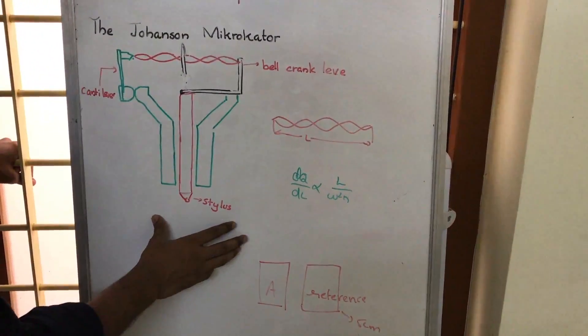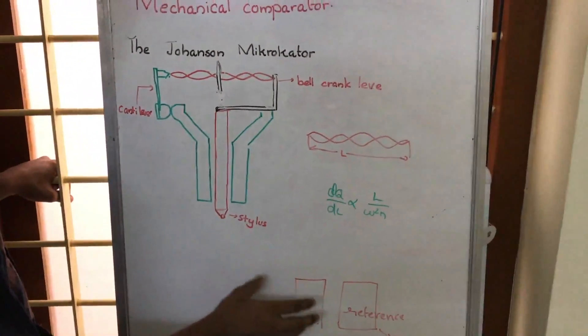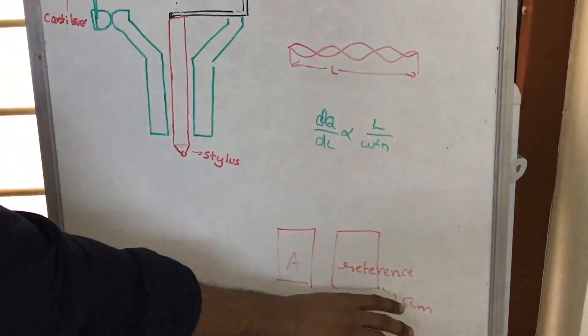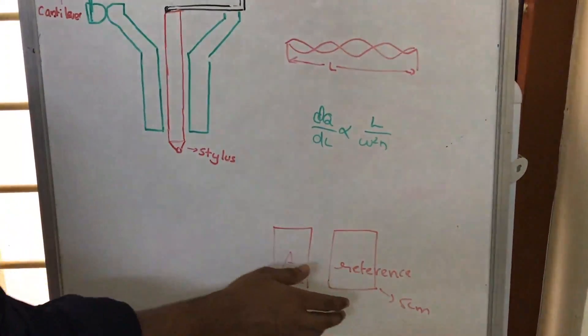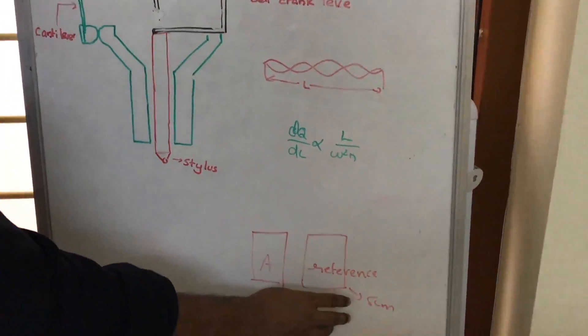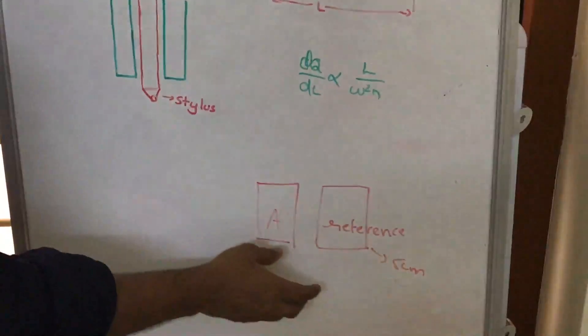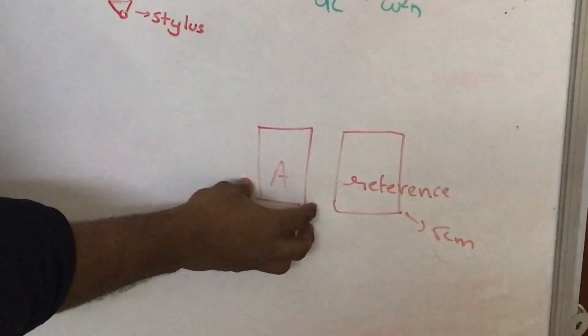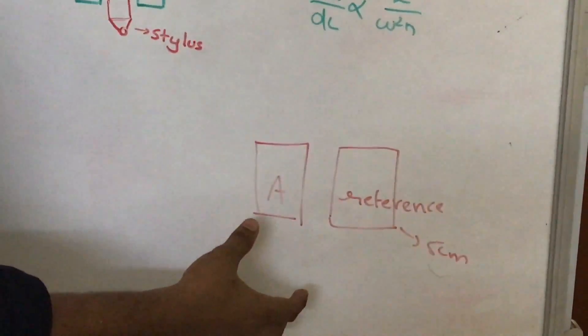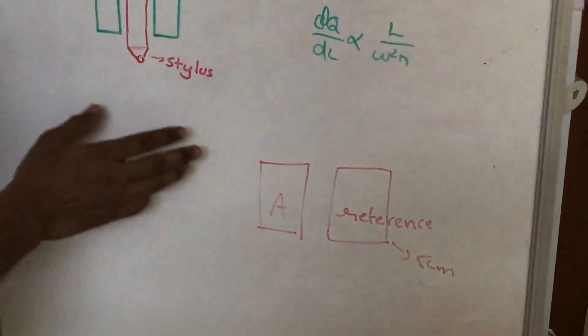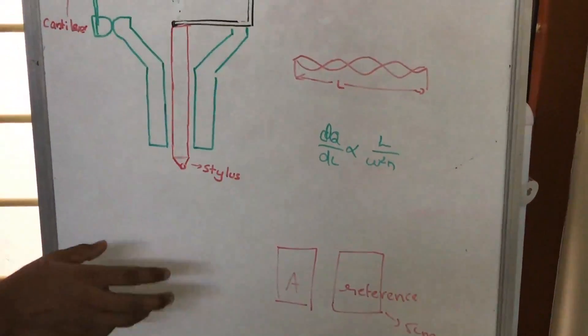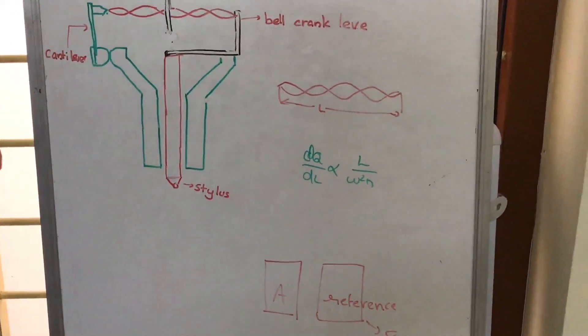of a particular instrument whereby we use a reference body and set this instrument with respect to the reference body. After that, we replace the reference body with the particular body whose dimension is to be measured, and finally we obtain the actual dimension of this body.